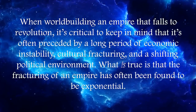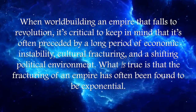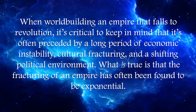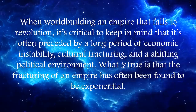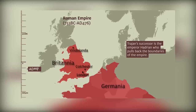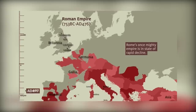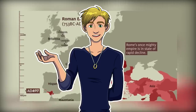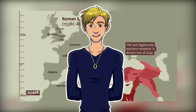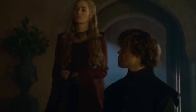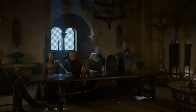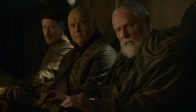When worldbuilding an empire that falls to revolution, it's critical to keep in mind that it's often preceded by a long period of economic instability, cultural fracturing, and a shifting political environment. The fracturing of an empire has often been found to be exponential — it breaks a little bit, then a little bit more, and then all at once. The revolution often doesn't come until that final stage, when the empire is at its weakest. If your story is about a revolution, it can help ground it in realism by showing that shift in economic well-being for everyday citizens, the struggle to maintain border states, or instability between factions in the government — to show why revolution is possible now but wasn't possible before.